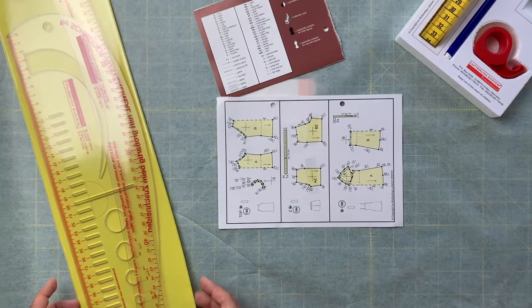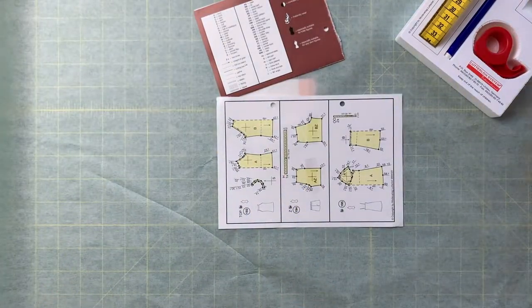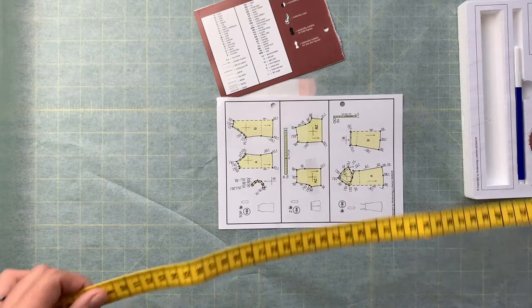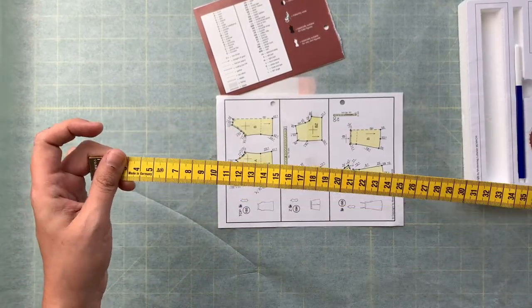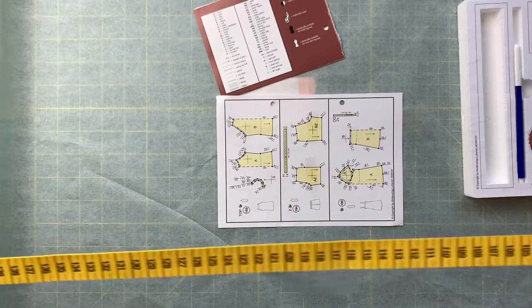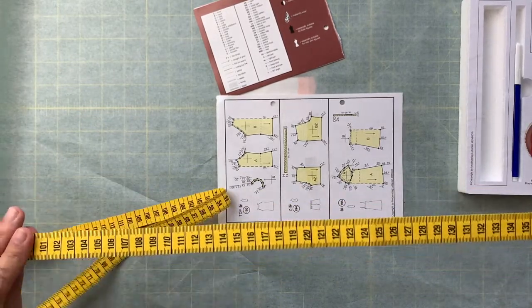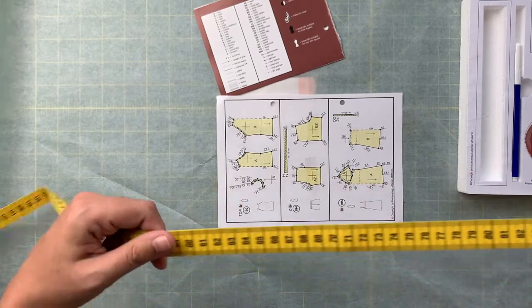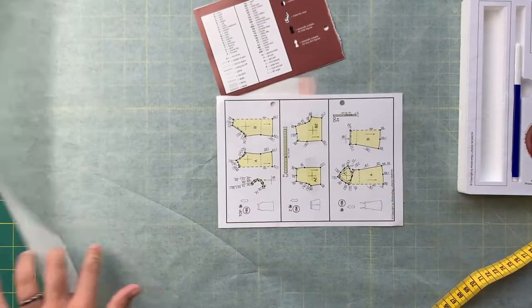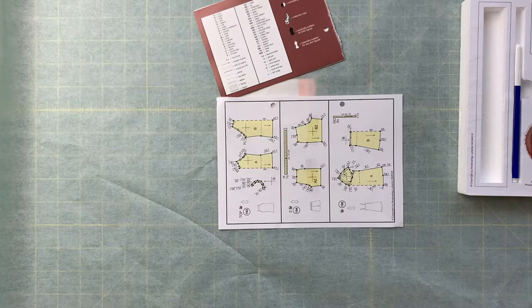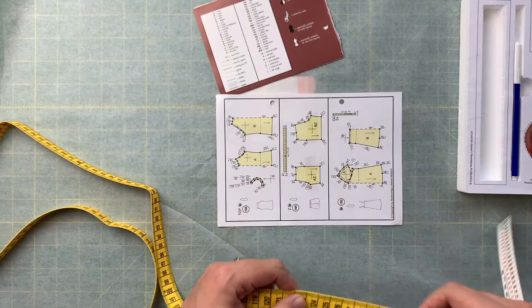Our first step is to take our hip measurement. We take this little nifty measuring tape that they sent with us. One side is for drawing out the patterns, and then the other side is a centimeter measuring tape. Taking my hip measurements, I am getting roughly 124 centimeters.